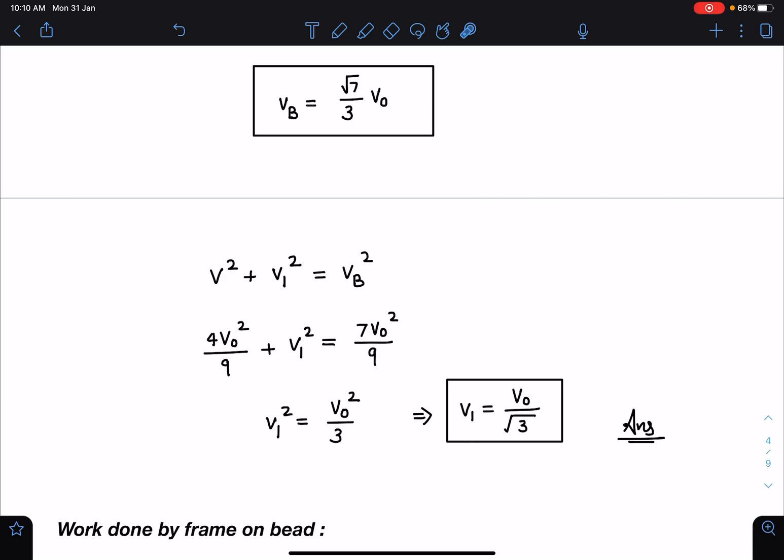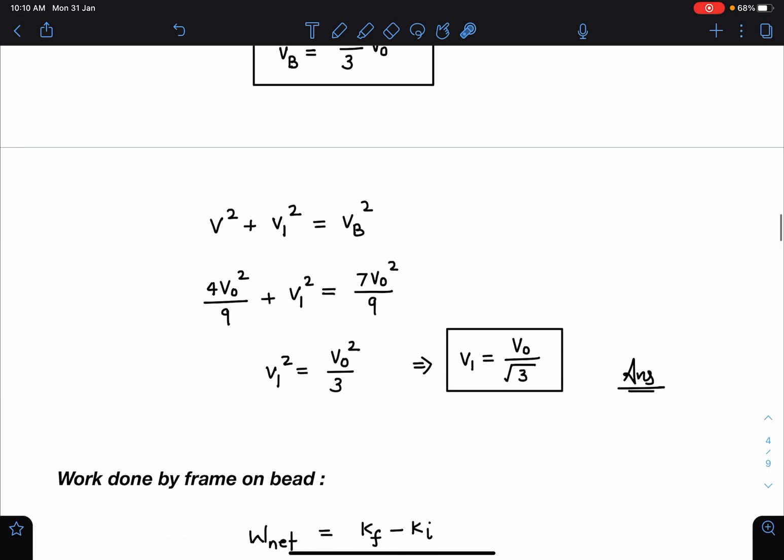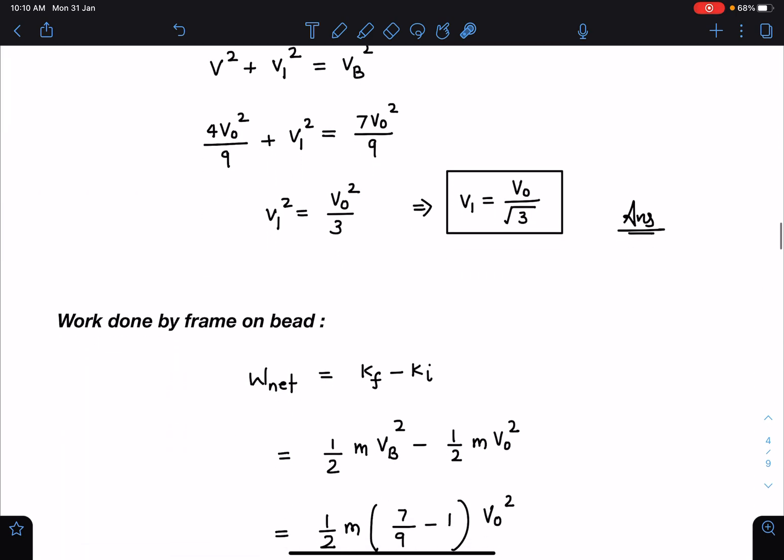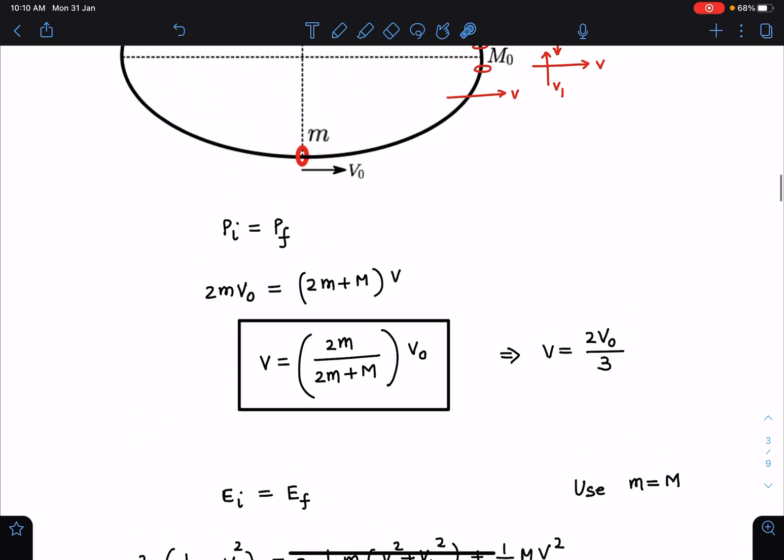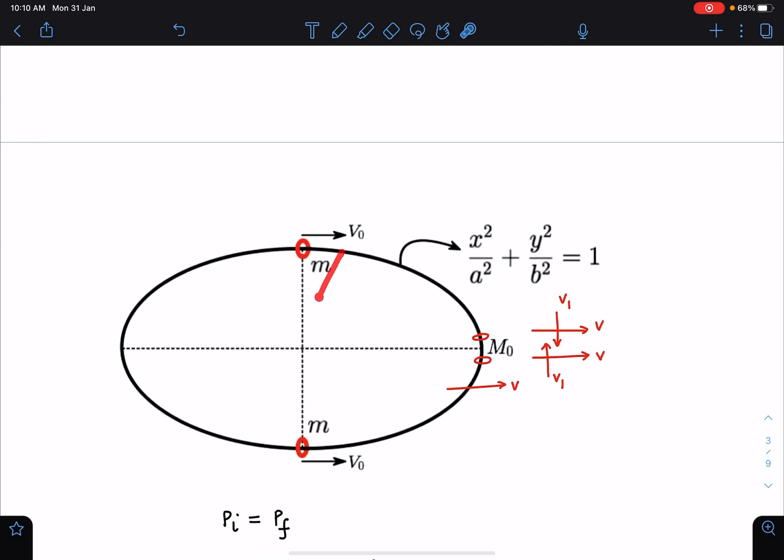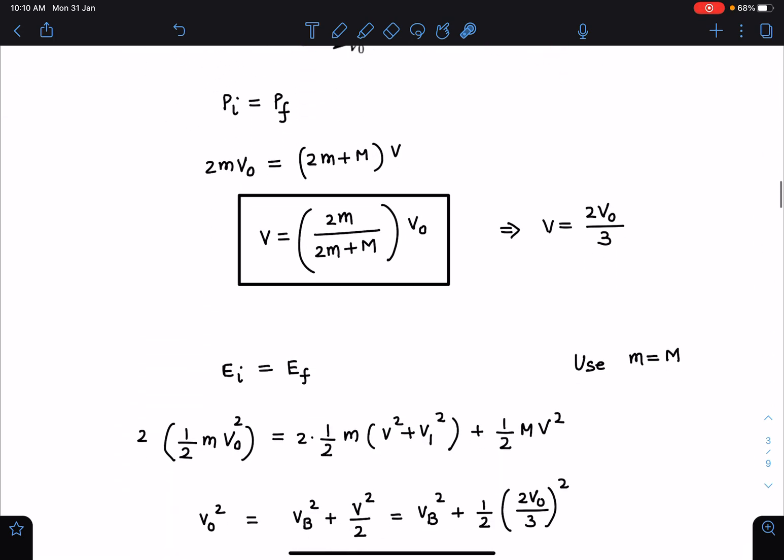So once I know this value, I can simply write work done by the frame on the bead as the change in kinetic energy of the bead. You can see here on these beads, this normal reaction will be acting in this manner on the beads, so negative work done we are expecting.